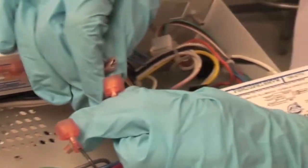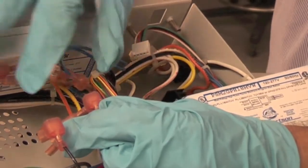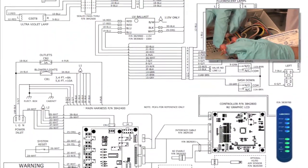Wire the UV ballast into the wiring harness following the wiring diagrams that can be found on labconco.com.